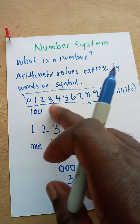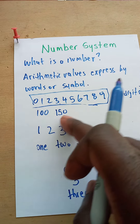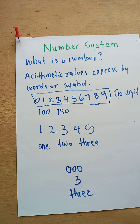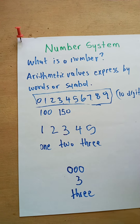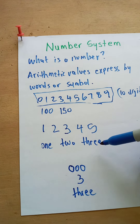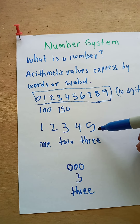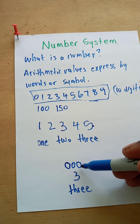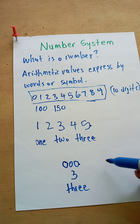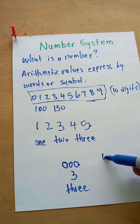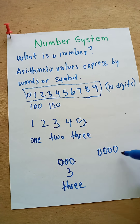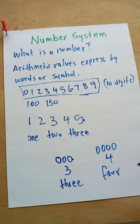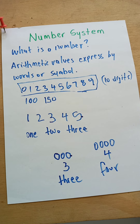We want to take a closer look at different types of numbers, but first we need to understand that these are the ten digits we use to make any number we want. A number is basically an arithmetic value expressed by words or symbols representing a particular quantity.